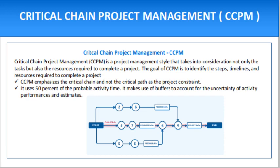Critical Chain Project Management is a project management style that takes into consideration not only the tasks but also the resources required to complete a project. The goal of CCPM is to identify the steps, timelines, and resources required to complete a project, giving you a roadmap to ensure you complete more jobs on time and on budget. CCPM is similar to the critical path method in that it strives to identify the critical set of tasks and timelines needed, however CCPM takes it one step further by also considering resources — people, equipment, physical space, and materials.